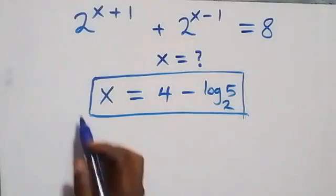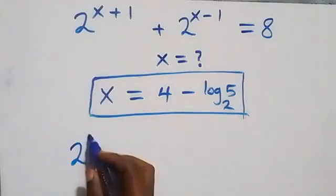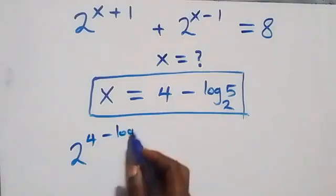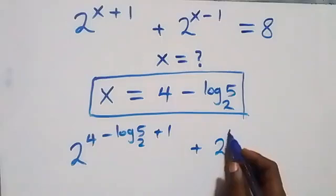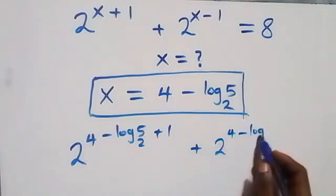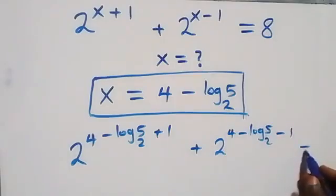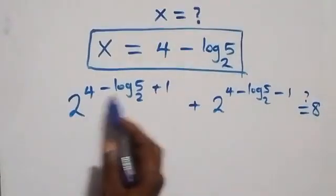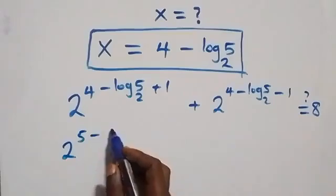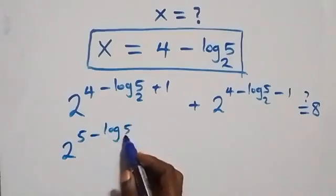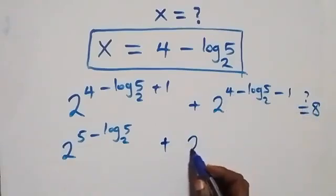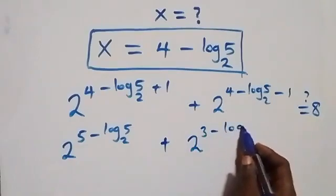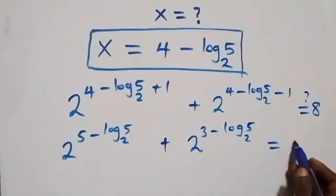Let's check if this satisfies the given problem. We substitute the value of x: two raised to power four minus log₂5 plus one, plus two raised to power four minus log₂5 minus one, equals eight. That is, two raised to power five minus log₂5, plus two raised to power three minus log₂5, equals eight.